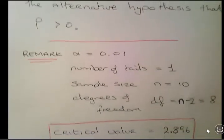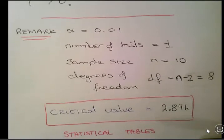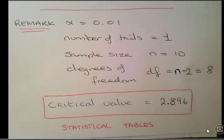So if you go to your tables, you should find that the critical value is 2.896. If you're not familiar with how to use the statistical tables, this is the wrong video you should be looking at. But you should be able to gather up all of the information that you see there in front of you and find that. It's a way of checking if you're going about it the right way.